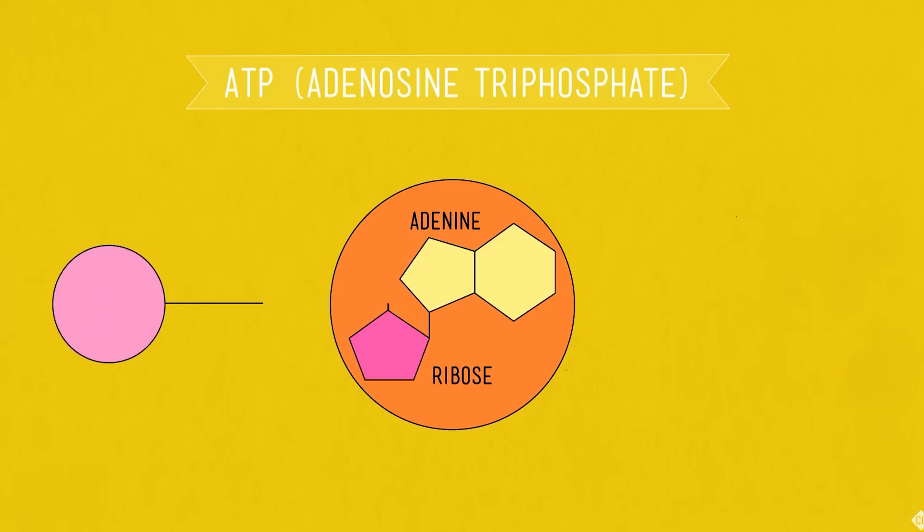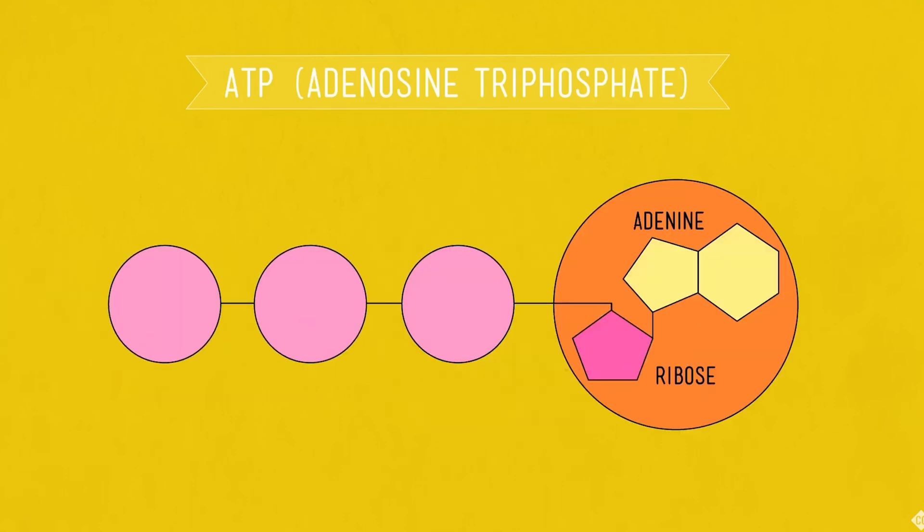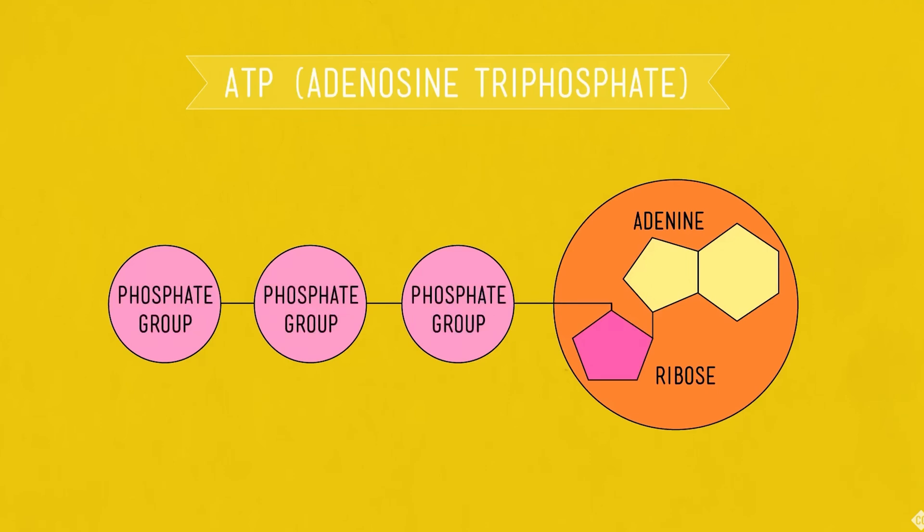Now, I can't really talk about phosphorus without talking about cellular respiration. Using phosphorus creates something called ATPs, and ATPs are the energy currency for your plant. ATPs are critical and crucial for the development of your plant, and phosphorus is directly linked to the production of ATPs.